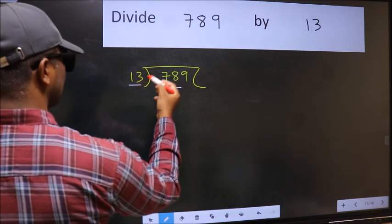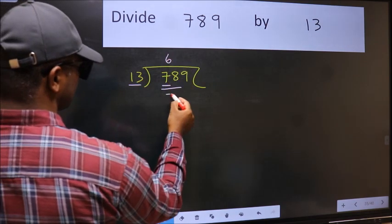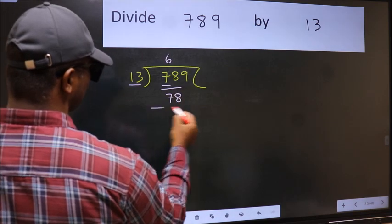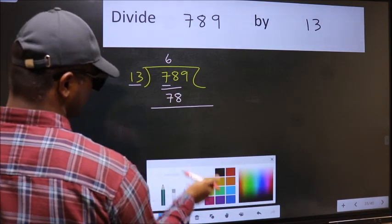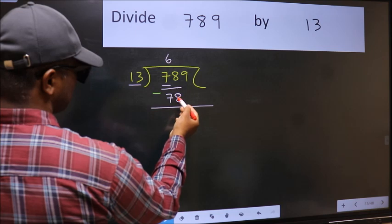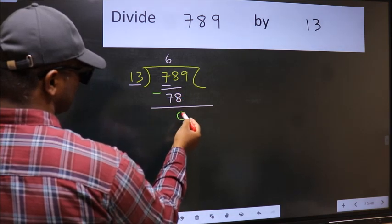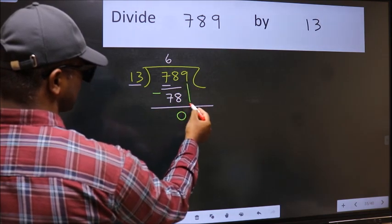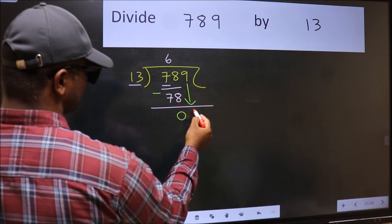When do we get 78 in 13 table? 13 times 6 is 78. Now we should subtract. 78 minus 78 is 0. After this, bring down the beside number, so 9 down.